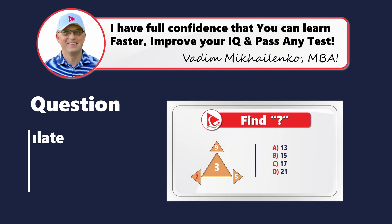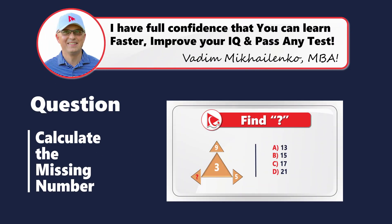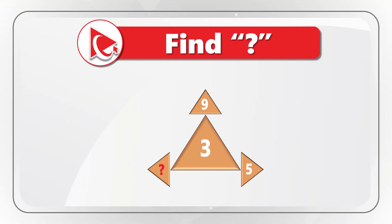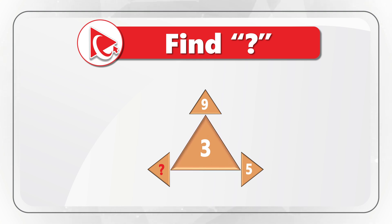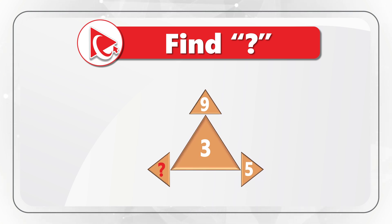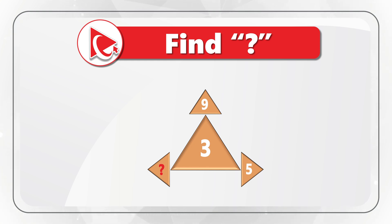Here's one of my favorite questions where you need to look at the image and calculate the missing number. You're presented with four triangles — one triangle in the middle is larger than the others and has the number three inside. There are three other triangles at the tips of the big triangle. The numbers inside those smaller triangles, starting with the bottom right, are five, nine, and then the missing number which you need to calculate.